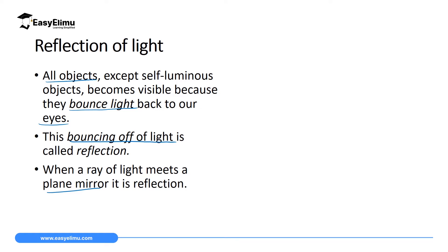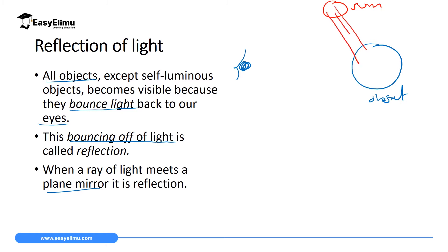We can answer the question: how do we see? We can only see if light from the object — let's say from the sun — comes to the object, and then the object reflects light into your eyes. When objects reflect light into your eyes, that is the only way you can see them. So we see an object after it has reflected light into our eyes. If the object has not reflected light to our eyes, then we cannot see that object.